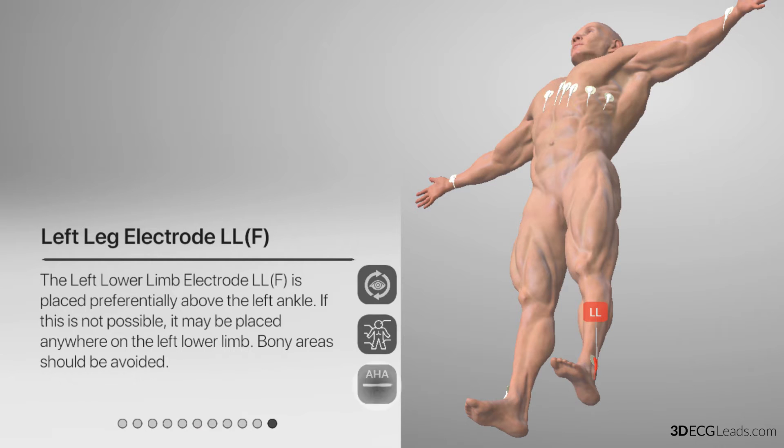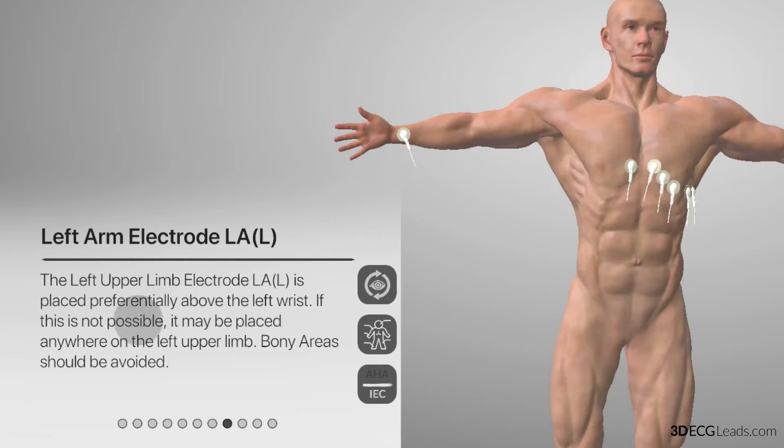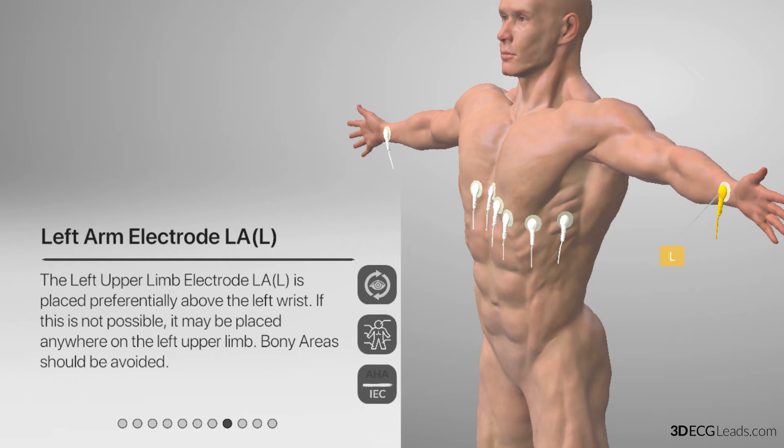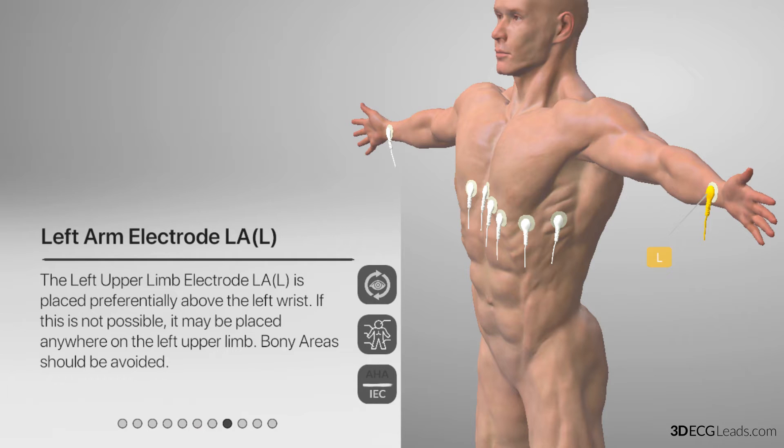Now let us switch the color coding system from the AHA to the IEC. What you will see now is that they are all positioned in the same place as described earlier, but the colors have changed, as well as the naming of the leads.